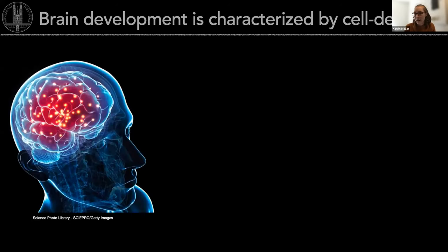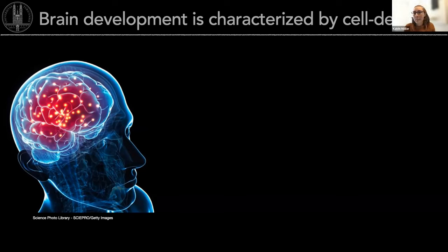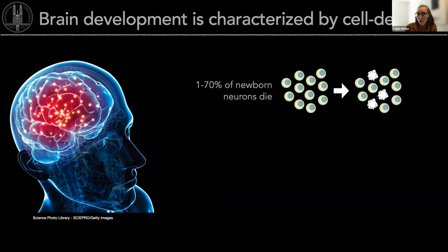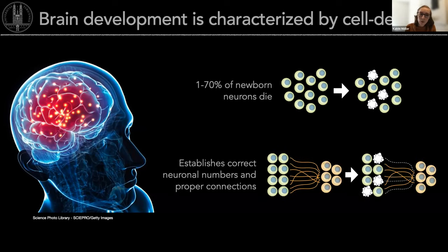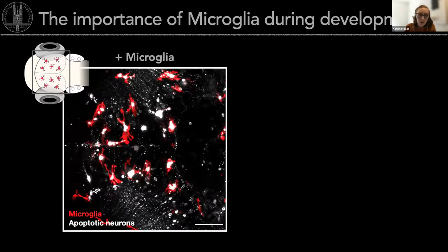As a background: this is the human brain — an amazing organ made out of millions of neurons that form trillions of connections, and these connections allow us to be who we are — to see, move, and feel emotions. But interestingly, during the development of this organ there's a massive production of cells, but up to 70% of these newborn neurons die. This is a seemingly very wasteful process, but it's actually quite critical to establish correct neuronal numbers and proper connections. In response, our body has evolved a specialized immune cell called microglia in the brain.